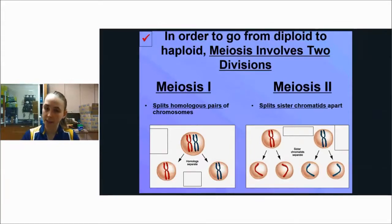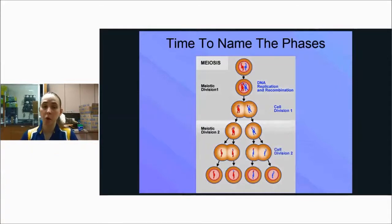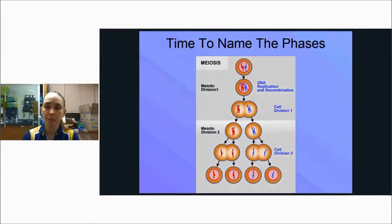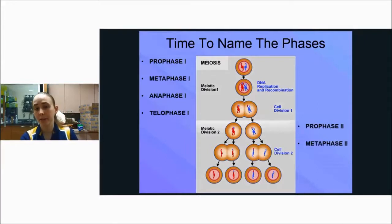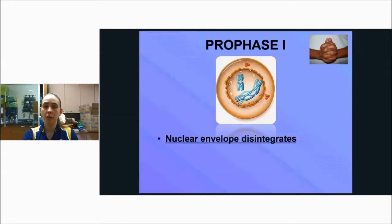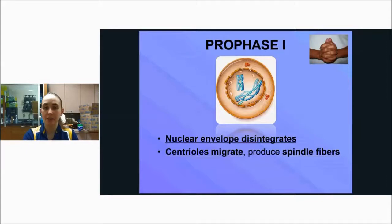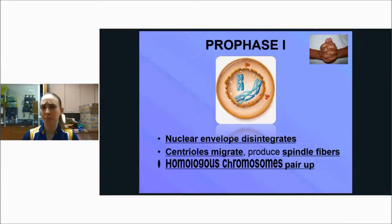Time to name the phases of meiosis one through meiosis two. At the top you have prophase one, then metaphase one where chromosomes line up in the middle, anaphase one where they split apart, telophase one where two new cells and nuclei form, then prophase two, metaphase two, anaphase two, and telophase two. During prophase one of meiosis, the nuclear envelope disintegrates and the centrioles migrate and produce spindle fibers — exactly the same as prophase of mitosis.